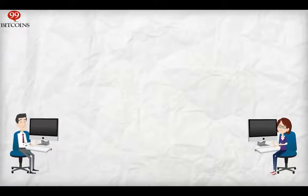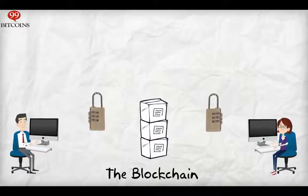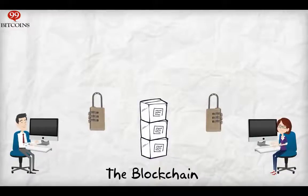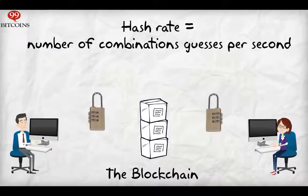Imagine that you are a miner, and each time you want to enter your block into the blockchain and get a reward, you would be given a combination lock, and would need to guess the combination in order to enter your block. Now let's say that your computing power, or hash rate, is the number of combinations you can guess in a second. So, the more computing power you have, the faster you'd guess the combination.